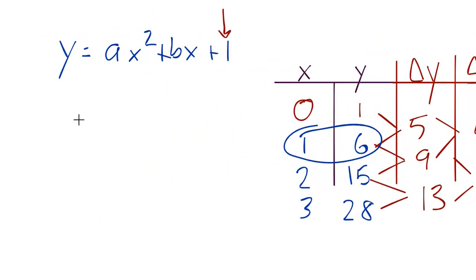So if we plug in x is 1, we get y is equal to 6. So we get 6 is equal to a times 1, which is just a, plus b times 1. Because again, we're substituting x equals 1. So plus b plus 1. I want to get a and b completely by themselves. So I'm going to subtract this 1 from both sides, and the 6 becomes a 5. That's a 5.